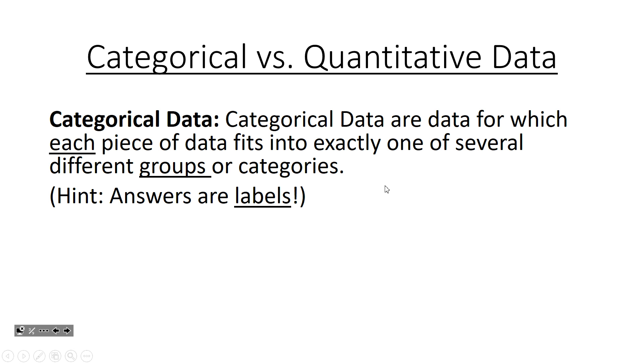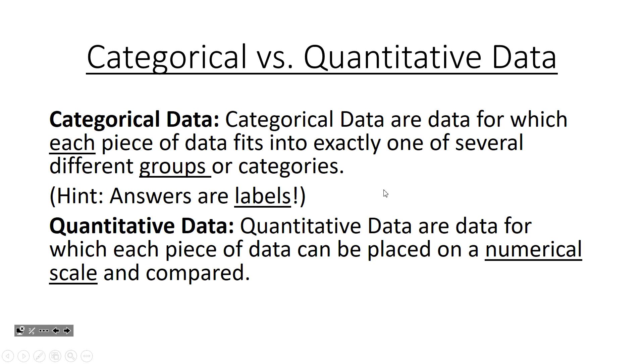These are like different categories that you can put data into, like labels. Now quantitative data are data for which each piece of data can be placed on a numerical scale and compared. These are more like your number line type data. How many hours you sleep, that would be quantitative data. So answers are numbers, not labels.